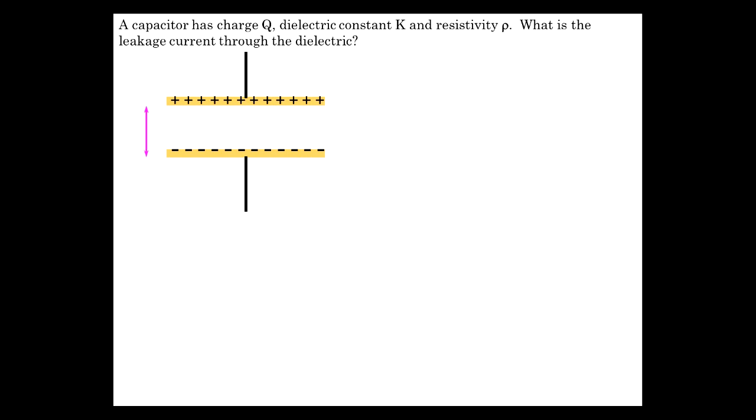So we have a capacitor has charge Q, plates separated by distance d. It's got a dielectric with a dielectric constant K and a resistivity rho.